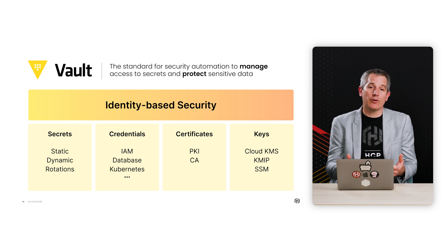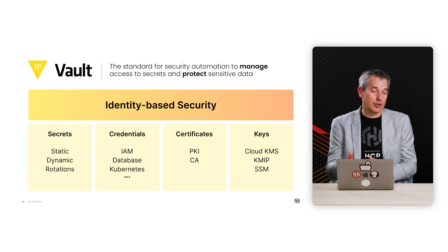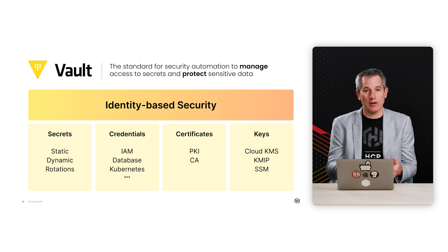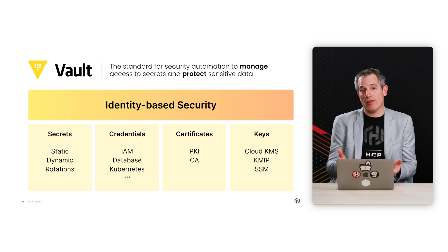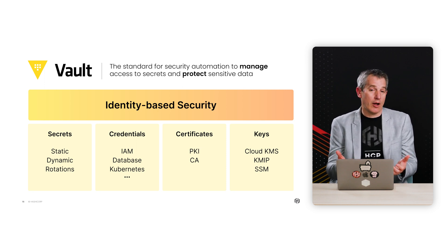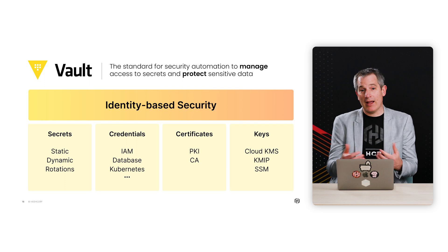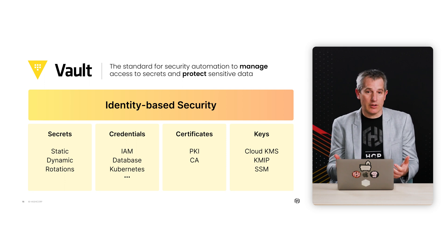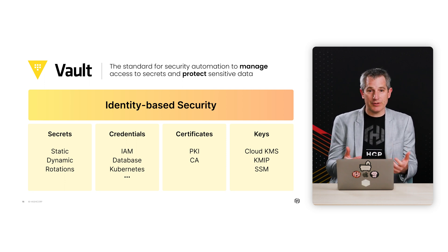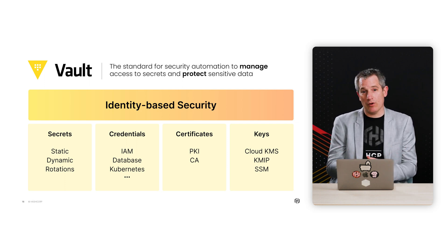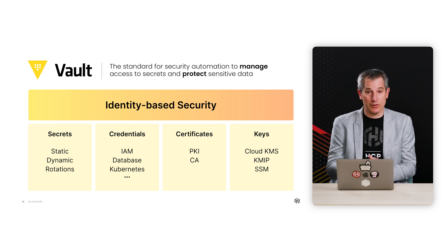But increasingly, we're trying to encourage dynamic secrets. These are secrets that live for a short amount of time and then are quickly rotated. As an example, we apply that to credentials for IAM accounts for public cloud, database credentials for an app to talk to a database, or for getting access to Kubernetes clusters. All of those are examples of ways that we can plug into a large ecosystem of credential providers to use dynamic secrets.